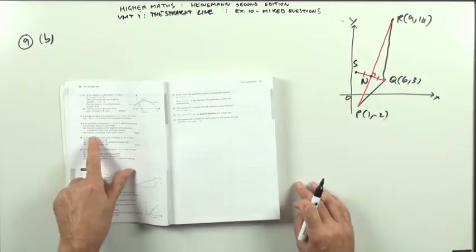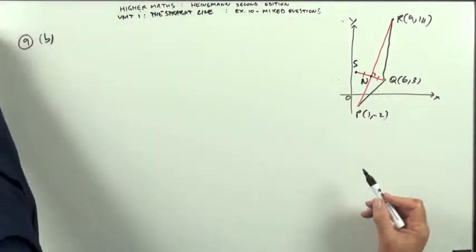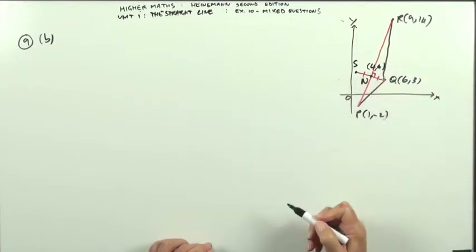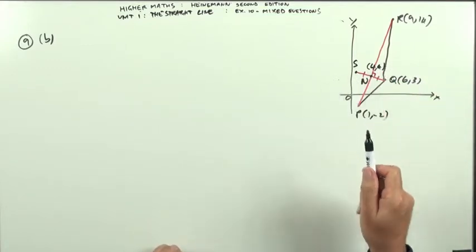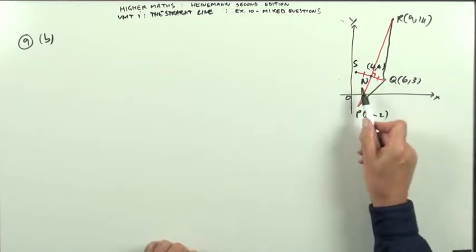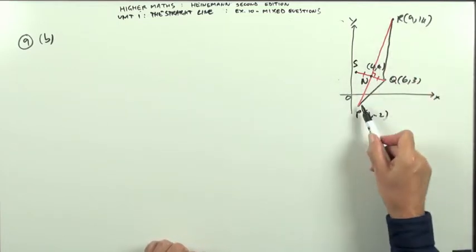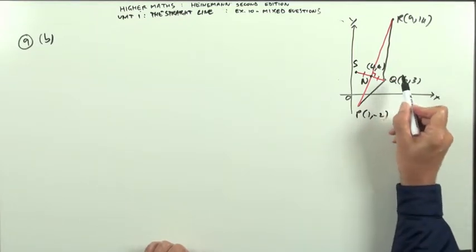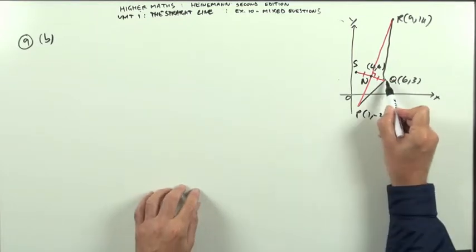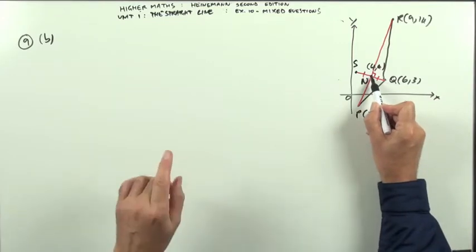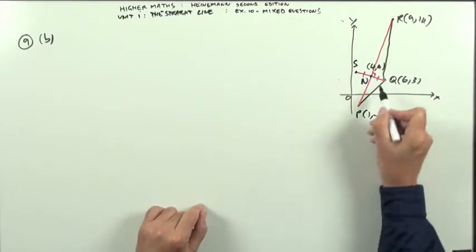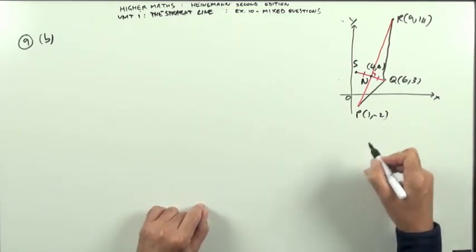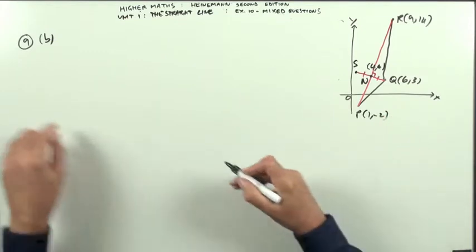Part B. Find the coordinates of the fourth vertex, S. N was already found to be (4, 4). Well, there's no equations required to get this. This is just a direct count the boxes. Because in a kite, the longer diagonal bisects the shorter diagonal. Which means however many steps it takes to get from Q to N, it'll be the same number of steps to get from N to S. And by steps, I mean useful steps, horizontal and vertical steps, steps that can just be counted. So it's just count the boxes.